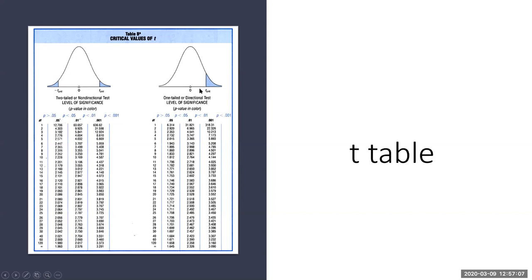So reading this t table really comes together when we start doing the six steps to inferential statistics, and you can see how we would use this table for step three when we're defining our rejection region. So check out the next video where we're going to go through an example.